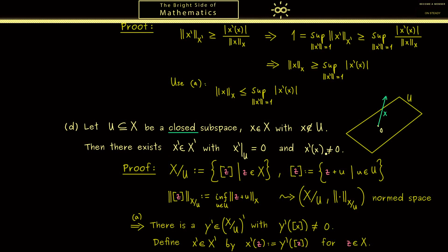This is fulfilled because the equivalence class of any vector u is always the zero vector. Now what happens if we put in the special vector x? Then we have here y'([x]) which is non-zero. Well so everything is satisfied and we have proven the claim.